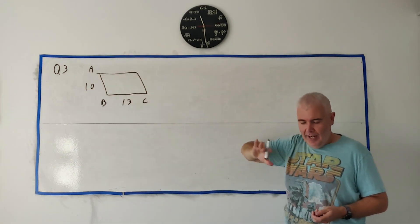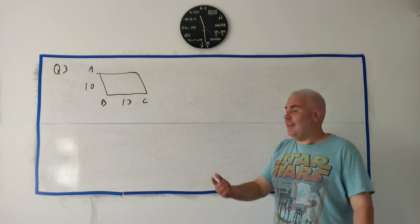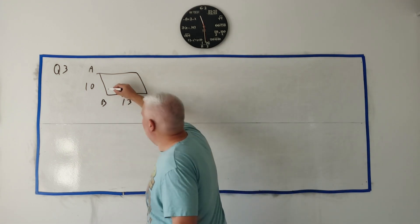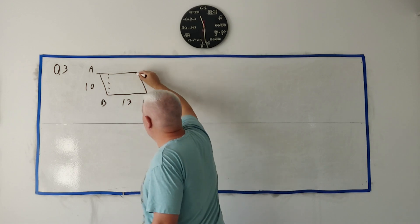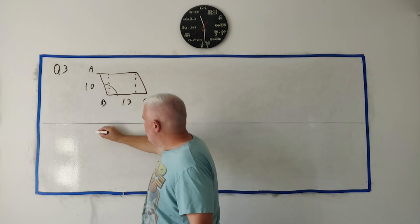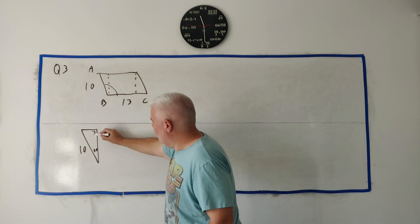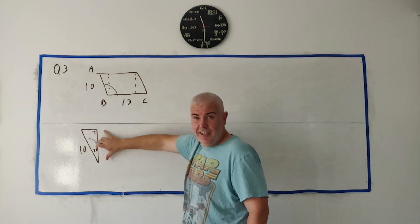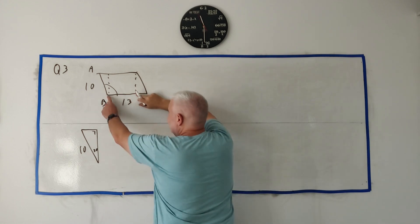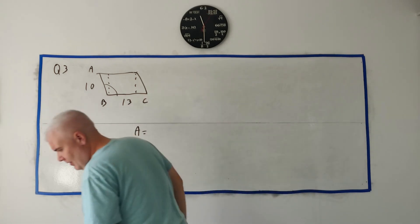Don't worry too much about getting that drawing perfect — it just sometimes makes life a little easier and helps you think about the question. They simply ask you to find the area of this parallelogram. If you don't remember the formula, you should be able to break this up into triangles and rectangles. Because we have angle 110°, you can actually find the height specifically, which is an important one.